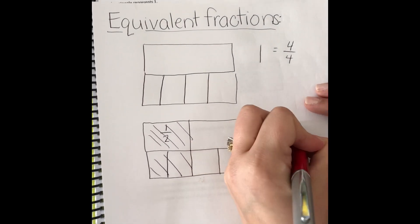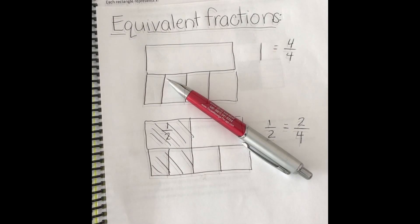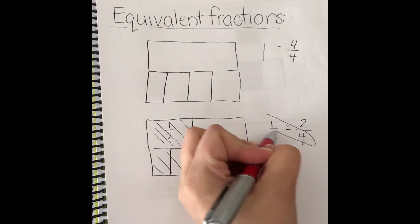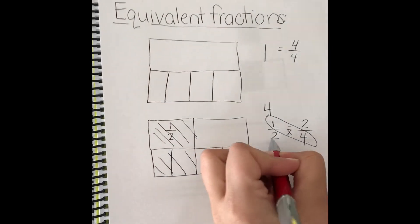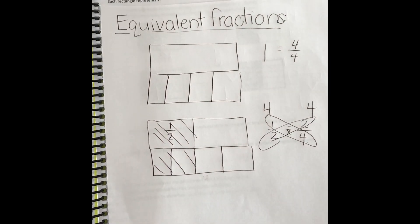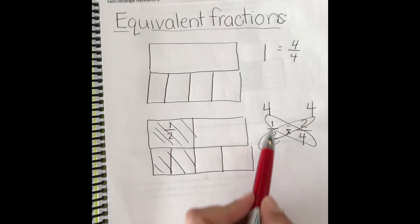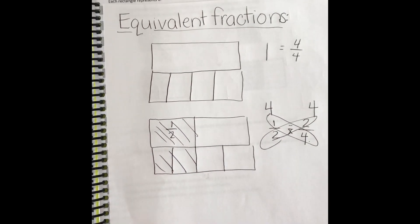One-half is equivalent to two-fourths, and a way we could check this is we could cross-multiply. We can see that four times one is four, and two times two is four. They're both worth the same amount. So that's what we're going to do today — look at equivalent fractions that have different numerators and denominators but are worth the same value.